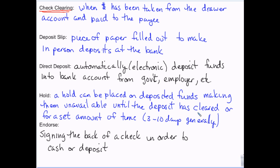Some banks are not as picky, but legally they're not supposed to process a check unless you signed the back of it. So just make sure you always sign the back of a check if you're depositing or cashing it. I also recommend always putting your account number on there, because that guarantees proof that it was meant to go into a specific account. That's endorsing.